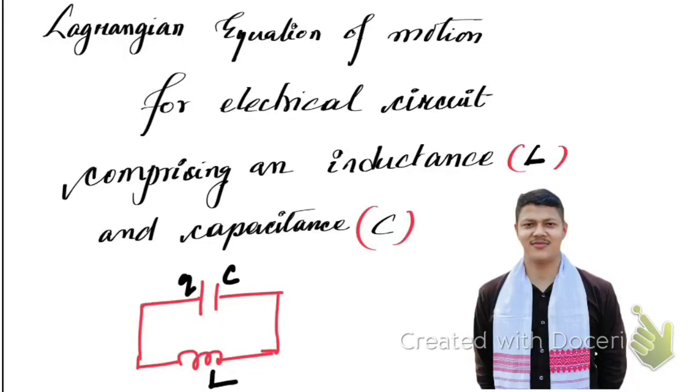Hello friends, welcome to another lecture of classical mechanics. Here we're going to discuss how to obtain the Lagrangian equation of motion for an electrical circuit consisting of inductance L and capacitance C—an LC circuit.